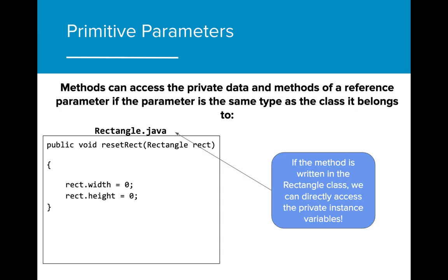If the method was written inside the Rectangle class file, then we could access the object's data by using the .variable notation. Notice that instead of using setWidth and setHeight, we can just change the value of width and height by writing rect.width and rect.height.